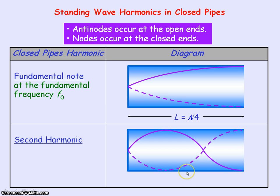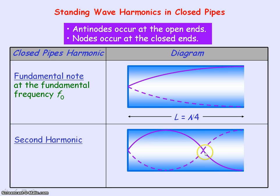This diagram is showing you the standing wave for the second harmonic. Following the rules, we have a node at the closed end and an antinode at the open end, but we've also got a node and an antinode inside the pipe. The length of the pipe represents half a wavelength plus a quarter of a wavelength, so the length of the pipe represents three quarters of a wavelength.